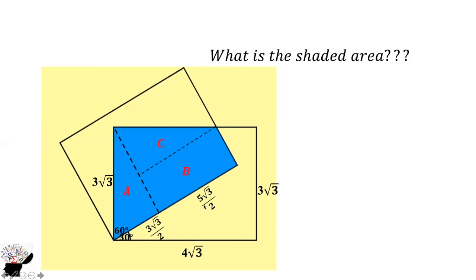This side is 4√3, so 4√3 minus 3√3/2 will give us 5√3/2.